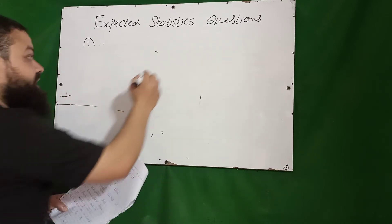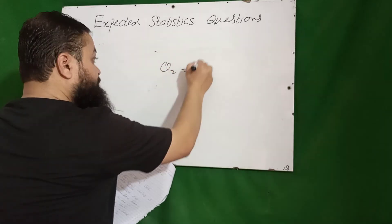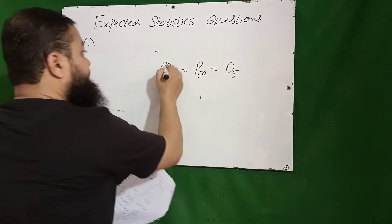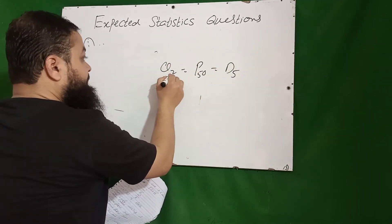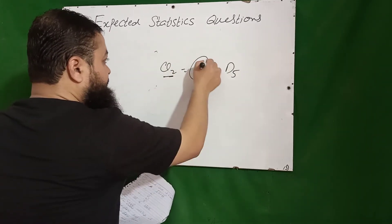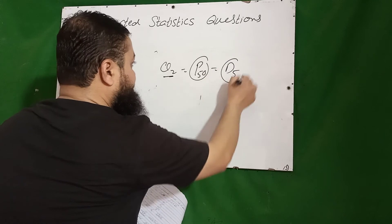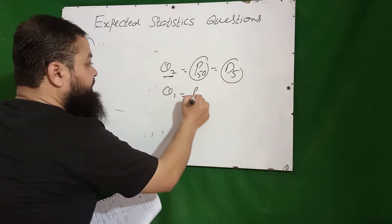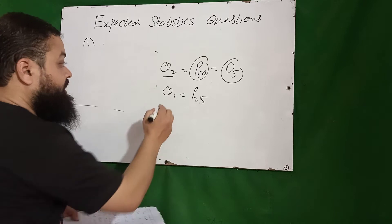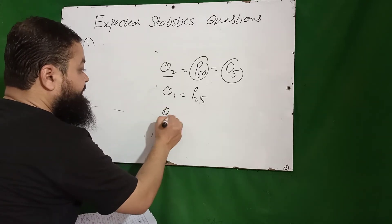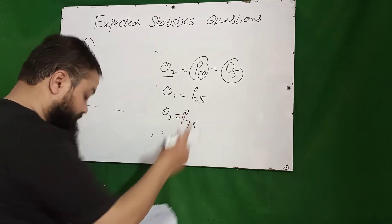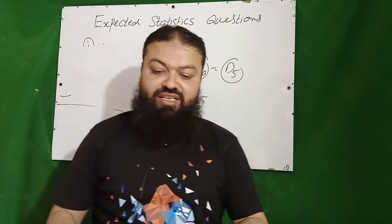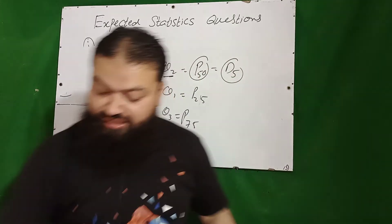Which one is correct? Q2 equals P50 equals D5 — second quartile, median — it equals P50 and D5, which is correct. Q1 equals P25 — also correct. Q3 equals P75 — also correct. Option D — all of these — is the correct answer.